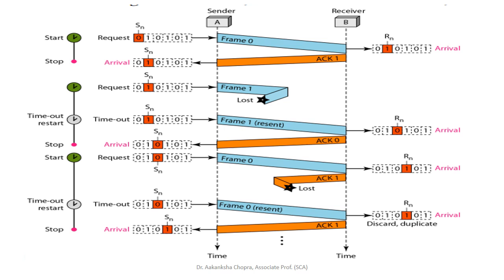This time, frame number 1 is resent and the receiver receives it. The receiver will send a positive acknowledgement. We can see that an ACK 0 frame is being sent, which indicates frame number 1 is received and now it is expecting frame number 0.